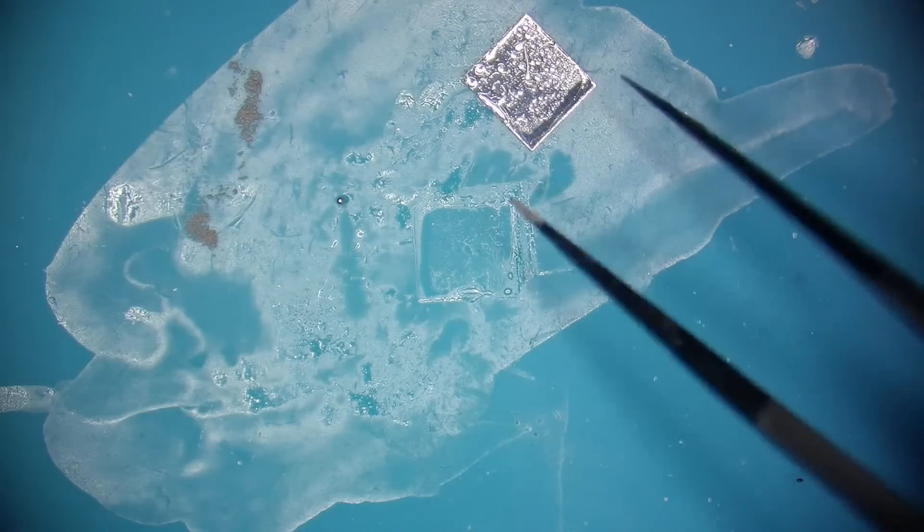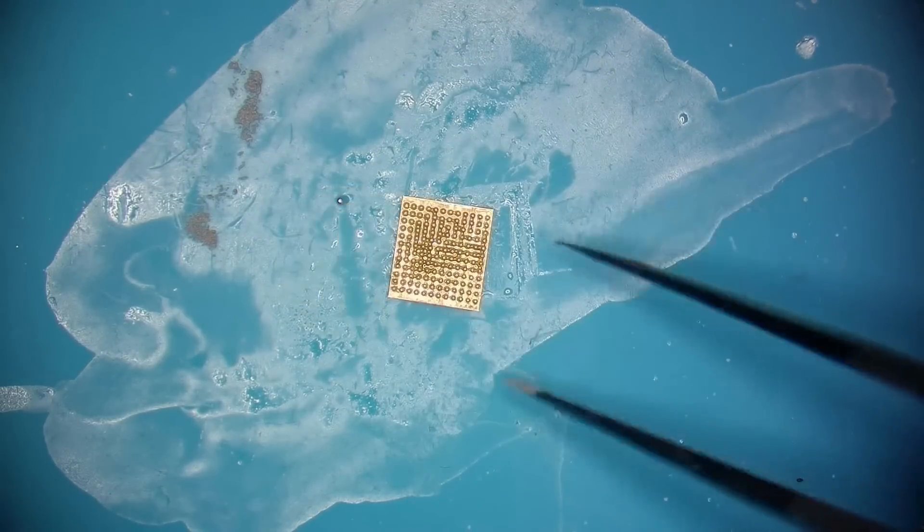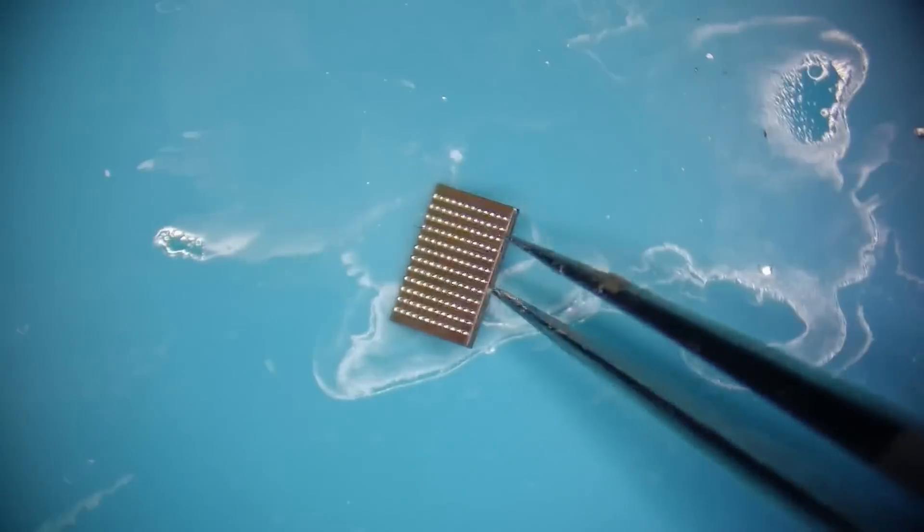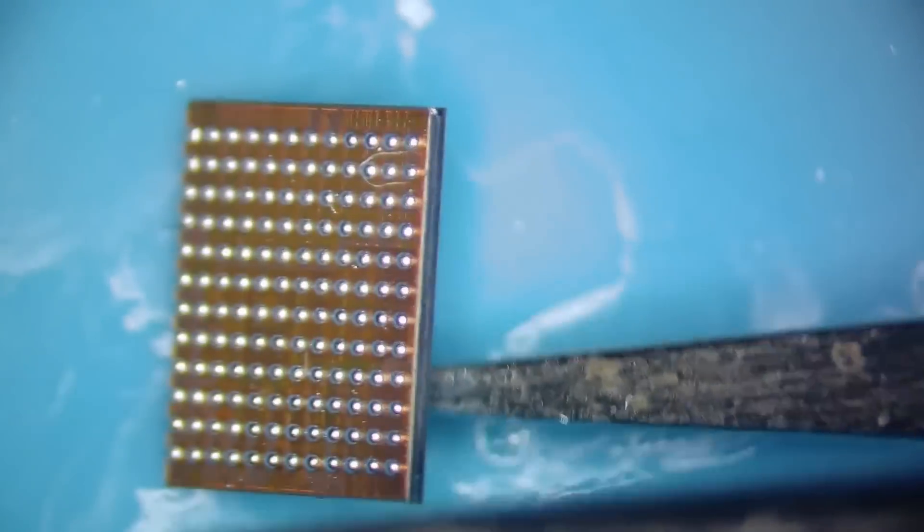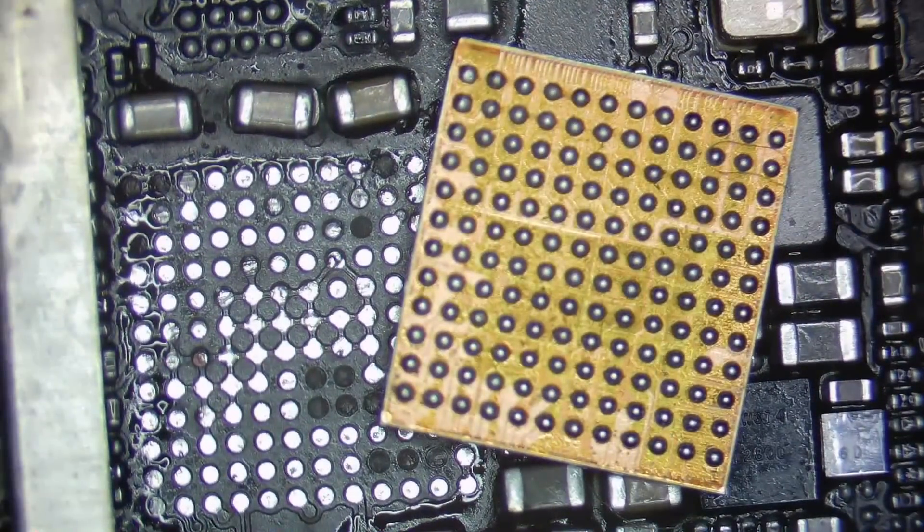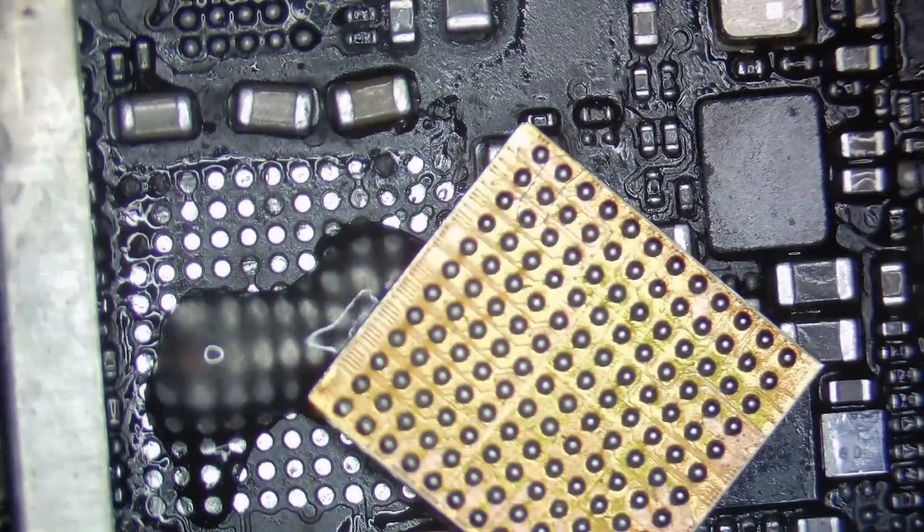Once all the balls are formed, you can stop heating. Then when the solder balls solidify, you can safely separate the chip from the stencil. This is how the chip should look when you're done re-balling. Now we take the board, apply some flux, and try to align the chip as best as possible.